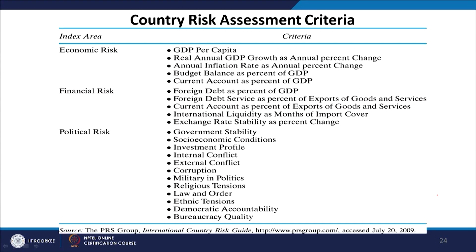There are three types of risks: economic risk, financial risk, and political risk. On the basis of these factors, an index is made so that the company can understand which country is riskier, which is less risky, where economic risk is more, where political risk is more, and where financial risk is more. When talking of economic risk, that includes GDP per capita, annual GDP growth, annual inflation rate, budget values as a percent of GDP, and the current account as a percent of GDP.